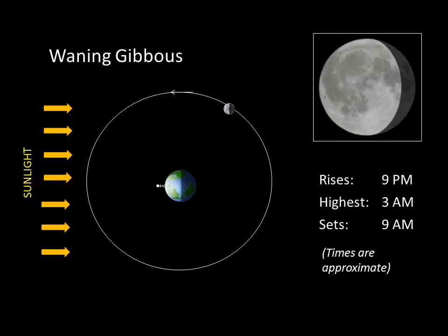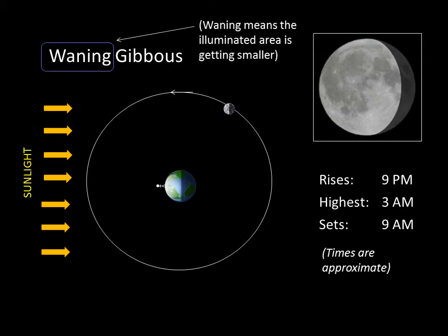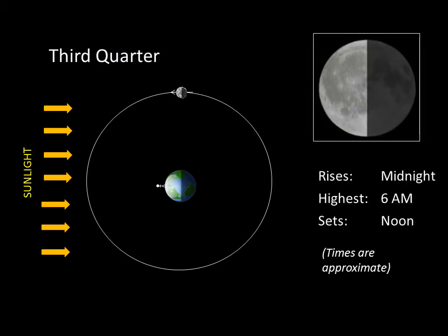After a full Moon, the Moon begins to wane and we see less of its illuminated side. A waning gibbous Moon rises after sunset and sets after sunrise. Three weeks after the new Moon, the Moon again looks like a half circle, only now the left side is lit. This is the third quarter phase.